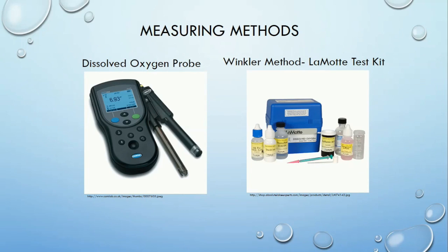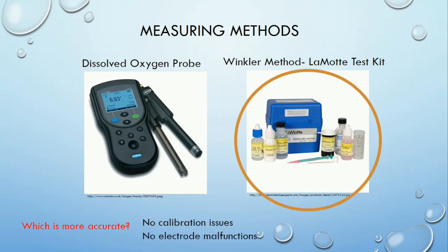But what if we don't know the percent saturation or the dissolved oxygen amount? There are tools to measure dissolved oxygen. There are digital probes available now, but the first method available was the Winkler method, using a Lamont water testing kit. So which method is more accurate? The Winkler method is more accurate because there are no probe calibration issues and no probe that can malfunction. Sometimes the most accurate way is the old way.